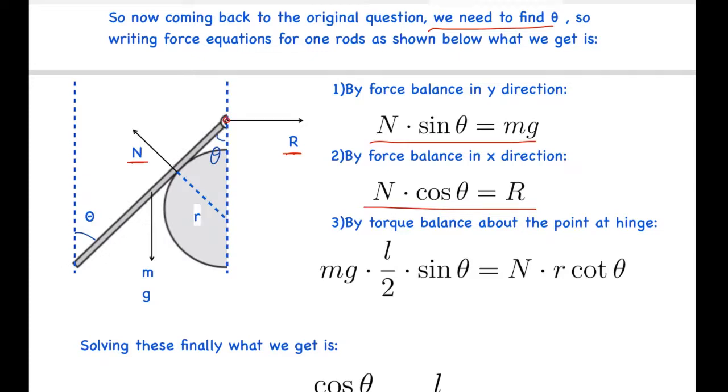By torque balance about the hinge, what we get is Mg L by 2 sin theta equals to N r cot theta. This Mg force is acting at a distance of L by 2 from the hinge. And this normal force is acting at this distance, which from this triangle, we can see that it is R cot theta.